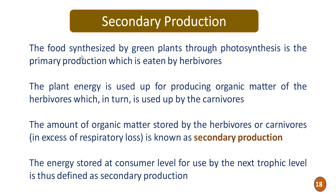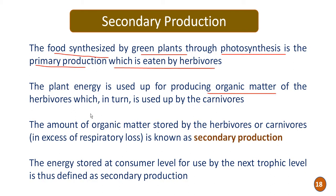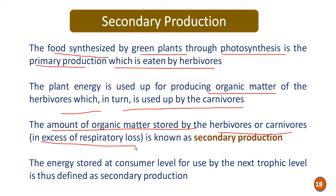Secondary production refers to the organic matter synthesized by green plants through photosynthesis (primary production) that is eaten by herbivores. The plant energy used for producing organic matter of herbivores is in turn used by carnivores. The amount of organic matter stored by herbivores or carnivores in excess of respiratory losses is known as secondary production — the energy stored at the consumer level for use by the next trophic level.